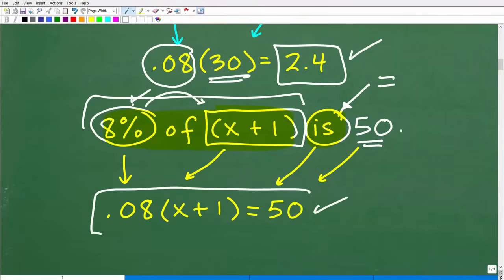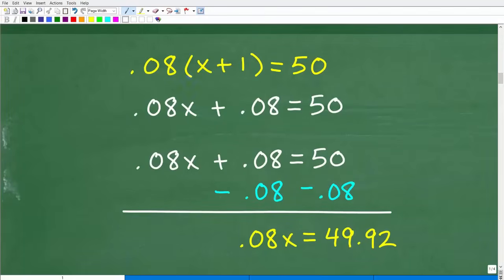So let's make sure we understand this. 8% of X plus one or 0.08 times X plus one is or is equal to 50. And what we have right here is a nice basic algebraic equation that hopefully you know how to solve. So here at this point, if you were confused on how to set this up, the second stage of this problem is your skills, your ability to solve this equation.